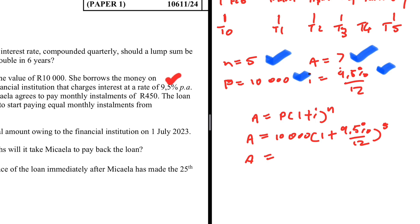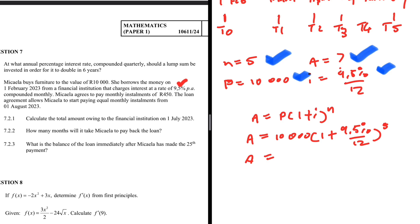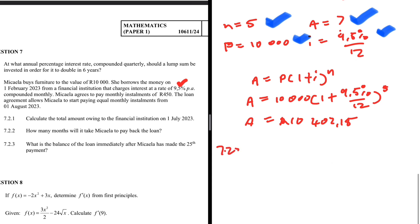The interest is 9.5% per annum compounded monthly, so that's fine. Substituting into the calculator: 10,000 × (1 + 9.5%/12)^5 gives R10,402.15. That is the amount Michael owes on 1 July 2023, as asked in question 7.2.1.